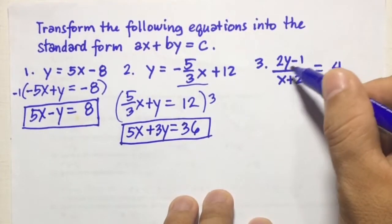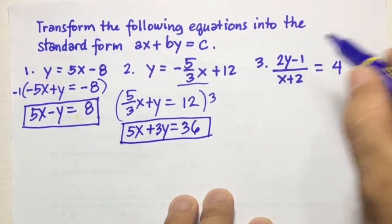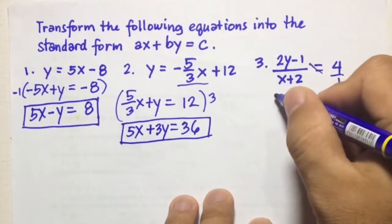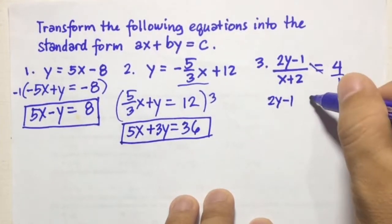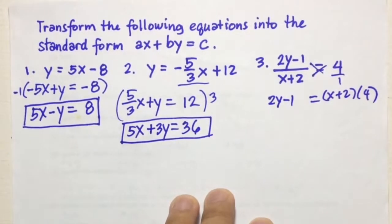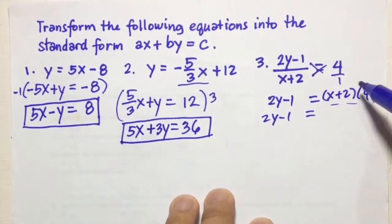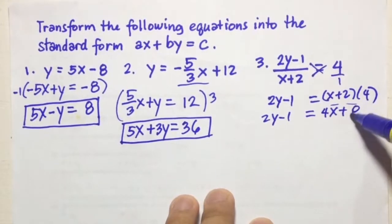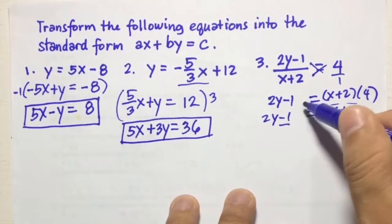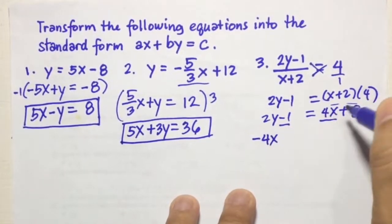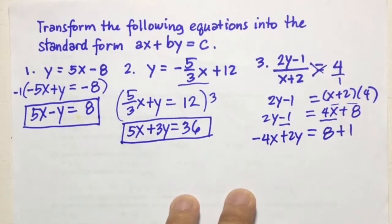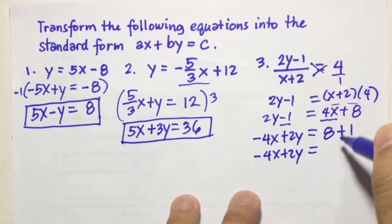Number 3: the quantity 2Y minus 1 over X plus 2 equals 4. We cross-multiply first — 2Y minus 1 times 1 equals X plus 2 times 4 — giving 2Y minus 1 equals 4X plus 8. We then transpose 4X to the left and negative 1 to the right side, getting negative 4X plus 2Y equals 8 plus 1, which is 9.